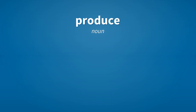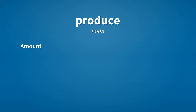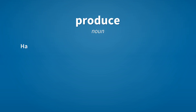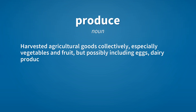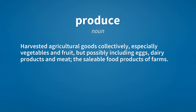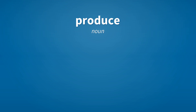Produce. Noun: items produced. Noun: amount produced. Noun: harvested agricultural goods collectively, especially vegetables and fruit, but possibly including eggs, dairy products, and meat — the saleable food products of farms. Noun: offspring.